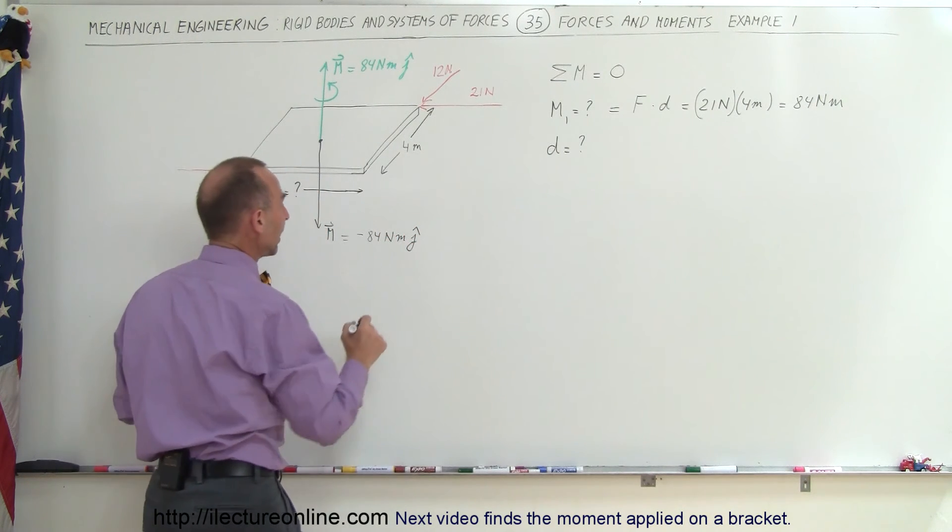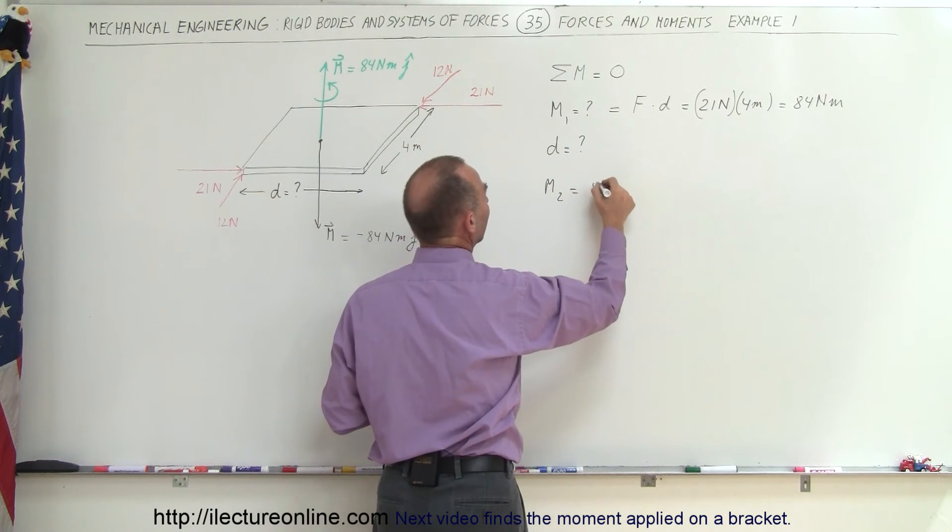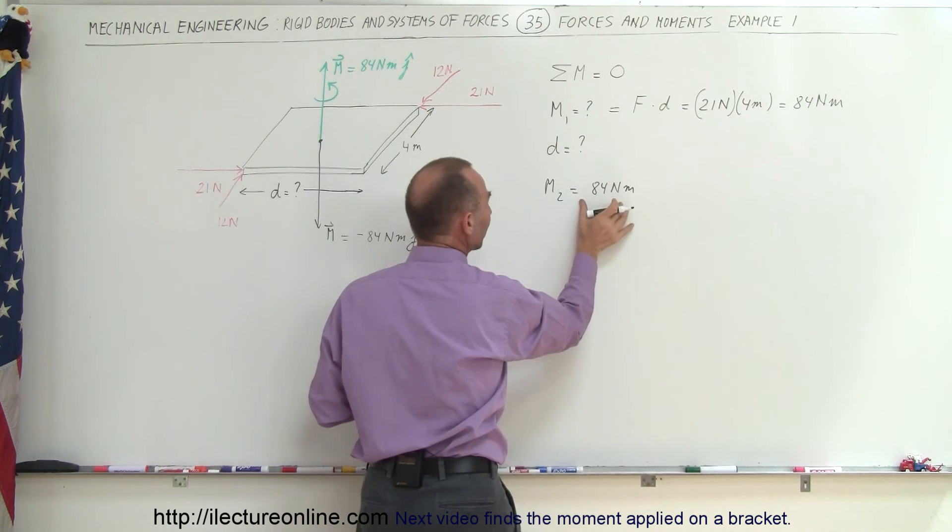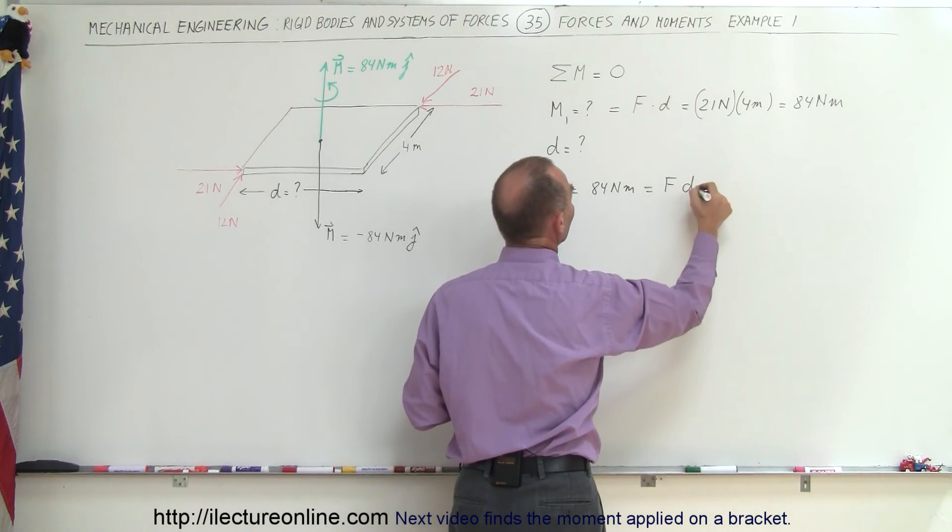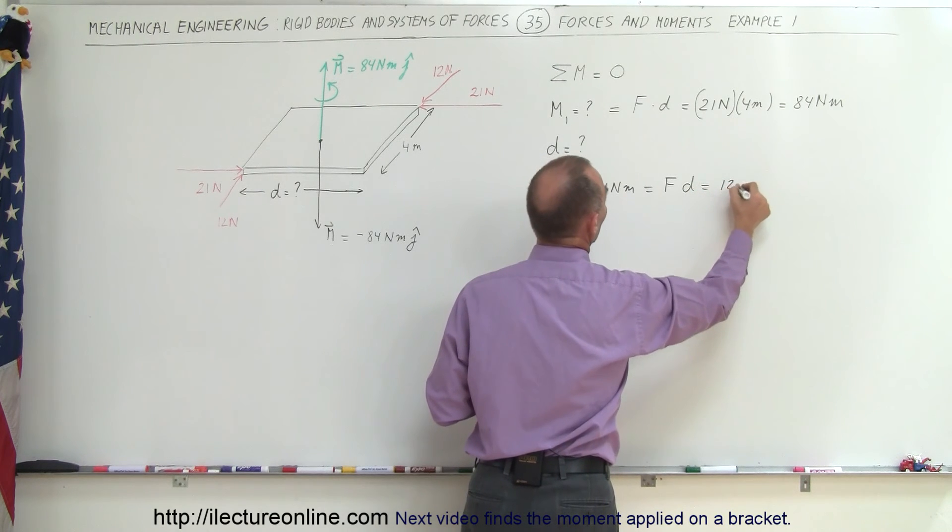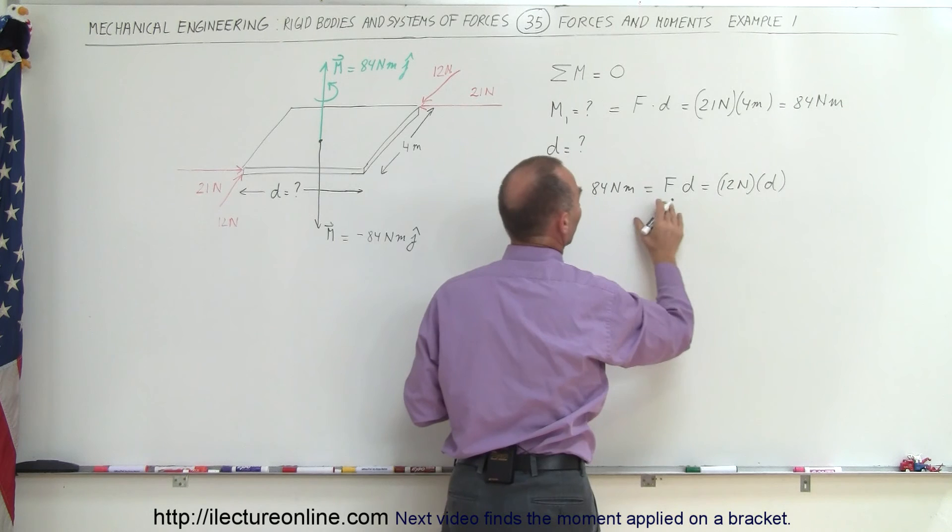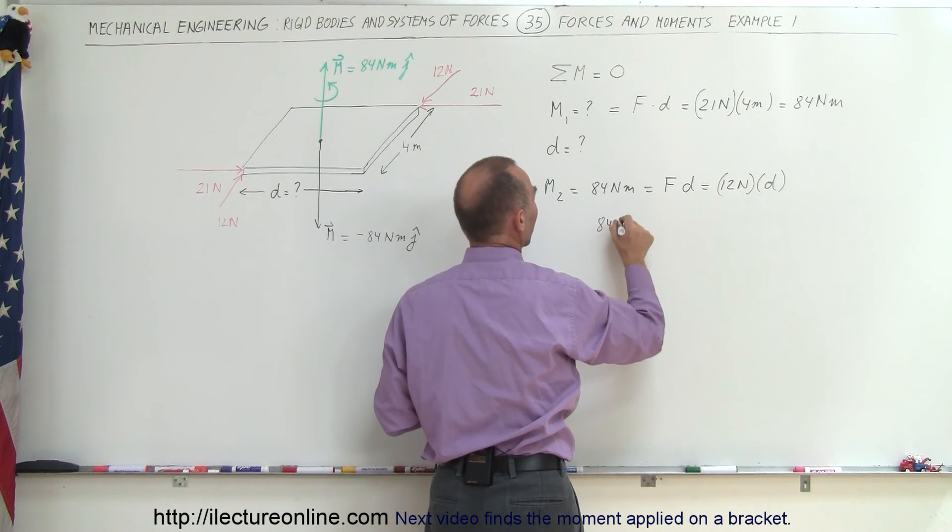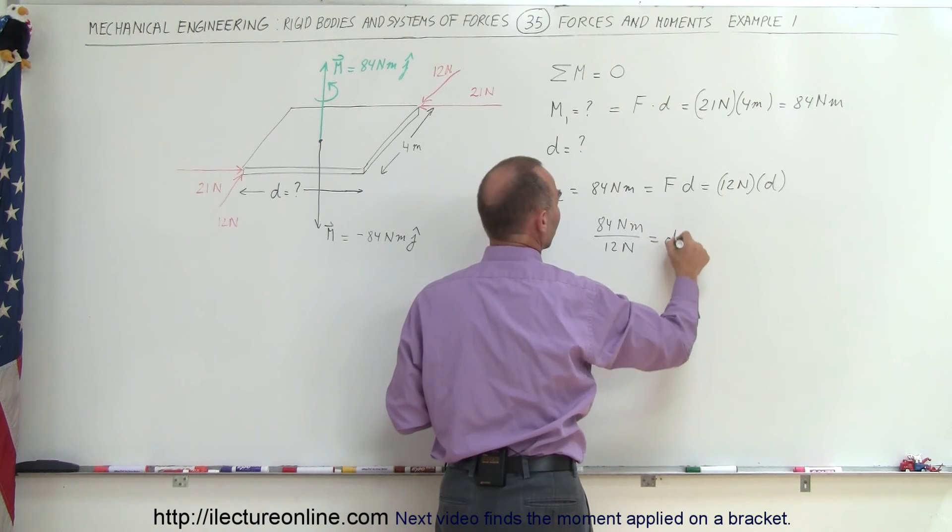And we know that M2 is going to be equal to 84 Newton meters. It's going to be negative, but the magnitude is positive, which is equal to the force times the distance. In this case, the force is 12 Newtons and the distance is unknown. So therefore, we can say that 84 Newton meters divided by 12 Newtons is equal to the distance.